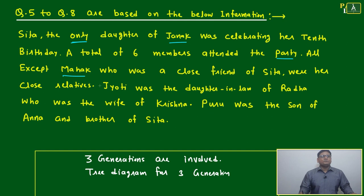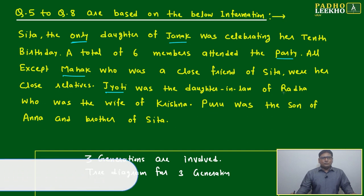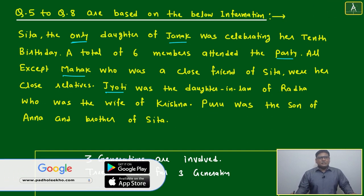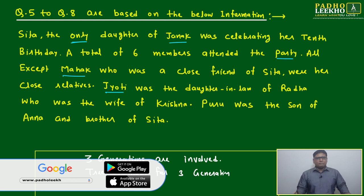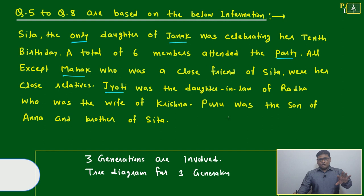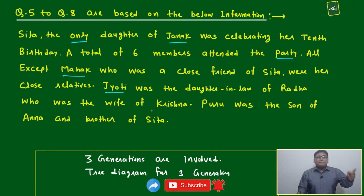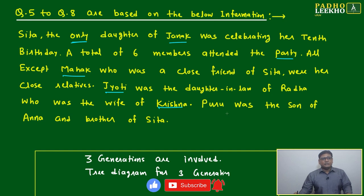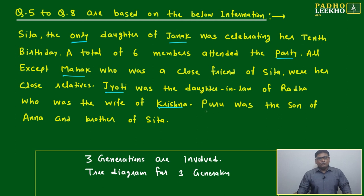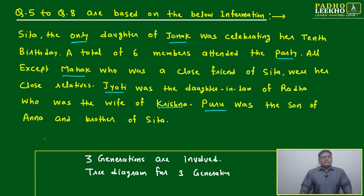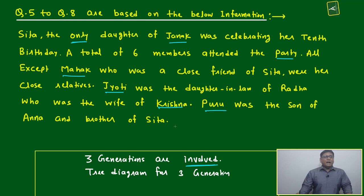Jyoti was the daughter-in-law of Radha, meaning Radha and Janak will likely be in the same generation. Radha was the wife of Krishna. Puru was the son of Anna and brother of Sita. This confirms three generations are involved: one side has Puru as a brother, another side has Jyoti as a daughter-in-law, and Janak represents the middle generation.